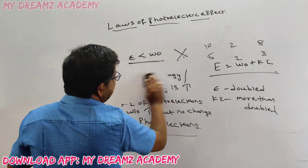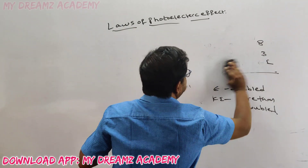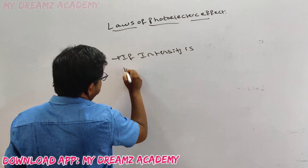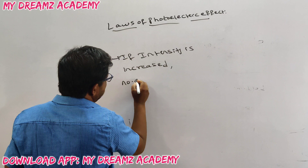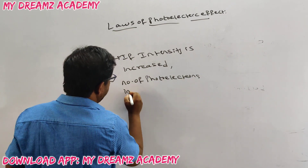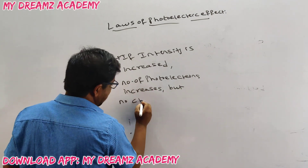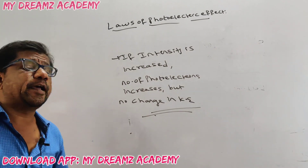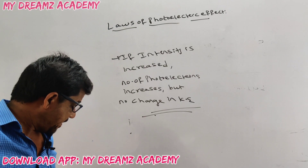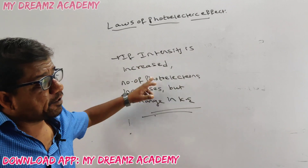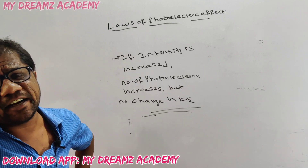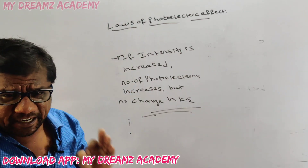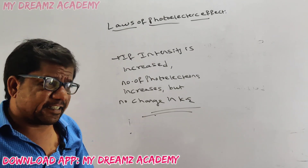The next law: if intensity is increased, the number of photoelectrons increases — but there is no change in kinetic energy. Please follow this difference carefully. Intensity increase → number of photoelectrons increases; incident energy increase → kinetic energy increases. These two statement questions are very regularly repeated for ESET, MSET, and any kind of entrance examination. If intensity is increased, the number of electrons increases, and therefore the current will increase.